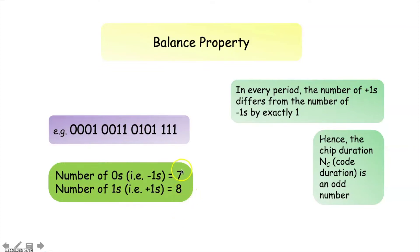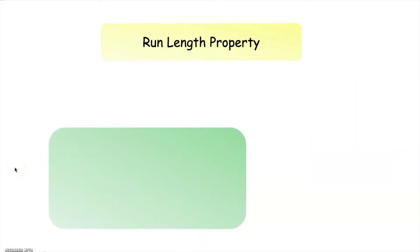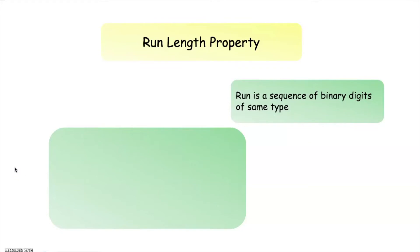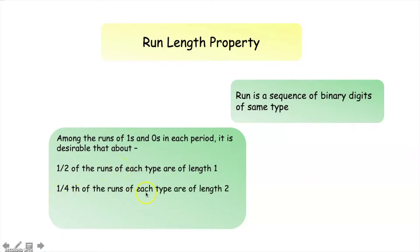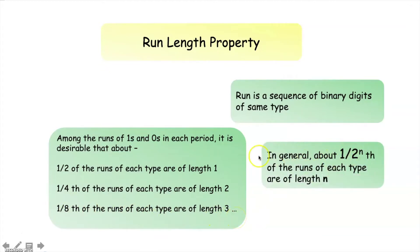Next is the run length property. A run in a spreading code is a sequence of binary digits of the same type. In a spreading code, among the runs of ones and zeros in each period, it is desirable that about half of the runs of each type are of length one, about one fourth of the runs of each type are of length two, about one eighth of the runs of each type are of length three, and so on. In general, about 1 divided by 2 to the power n of the runs of each type are of length n.